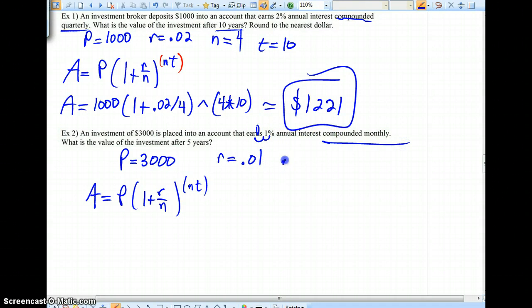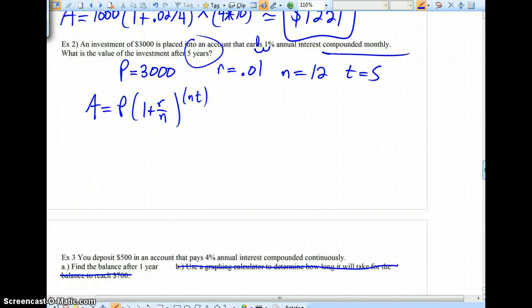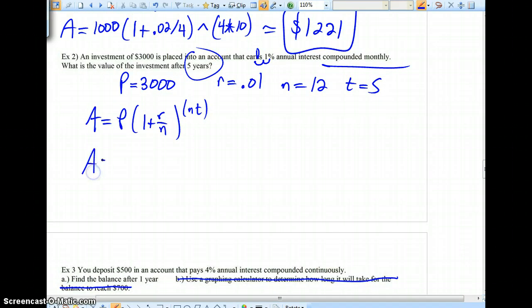We're compounded monthly. So n would equal 12. This is going to go on for five years. We're going to keep the money for five years. We'd like to know how much we have at that time. So we'll have 3,000 out in front. There's 1 plus .01 slash 12 caret. Raise that up to the 12 times 5.